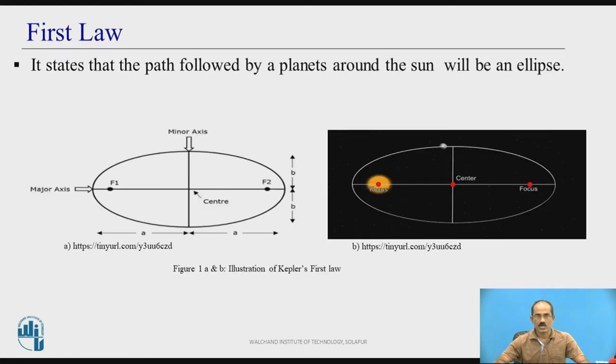Kepler's first law and its statement: It states that the path followed by planets around the sun will be an ellipse.